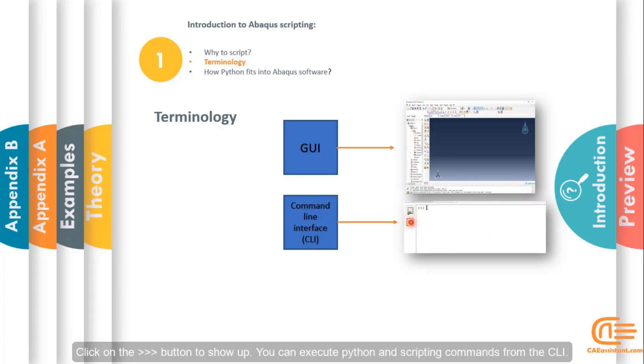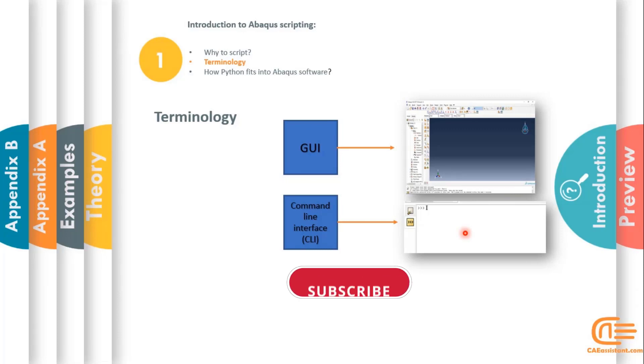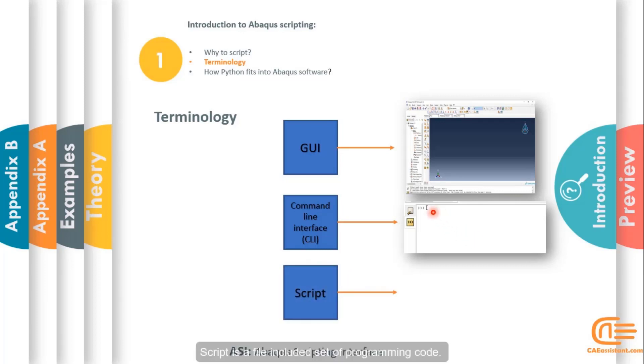Click on the arrow-shaped button to show it up. You can execute Python and scripting commands from the CLI.